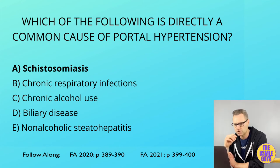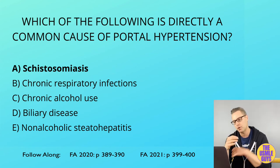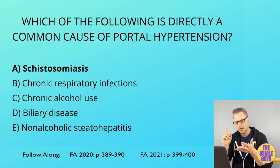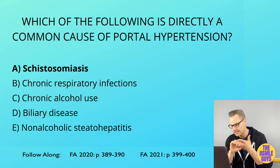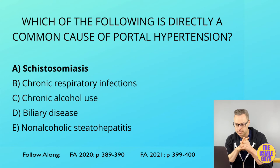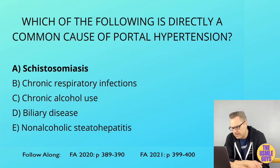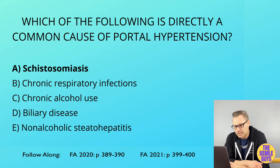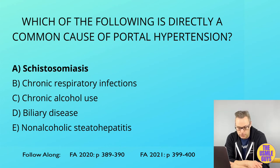Cirrhosis is a condition oftentimes caused by alcoholism, a history of viral hepatitis, autoimmune hepatitis, biliary diseases, non-alcoholic steatohepatitis, and certain genetic or metabolic diseases. A cirrhotic liver demonstrates diffuse bridging fibrosis and regenerative nodules that disrupt normal liver architecture, and this condition increases one's risk of developing hepatocellular carcinoma.